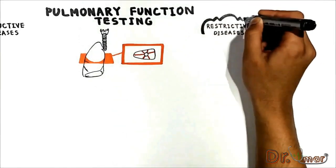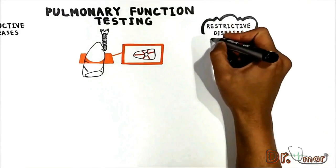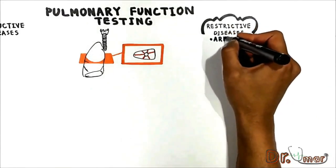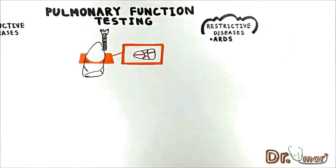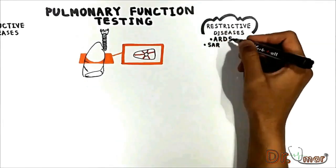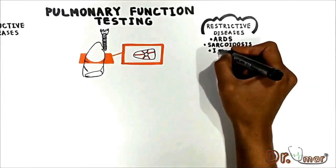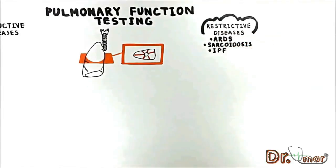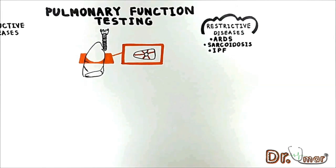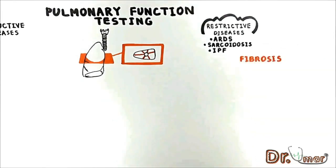Restrictive lung disease includes acute respiratory distress syndrome and interstitial lung diseases such as sarcoidosis and idiopathic pulmonary fibrosis. Let's see what happens with the lung given our example of the most classic form of restrictive disease — lung fibrosis.